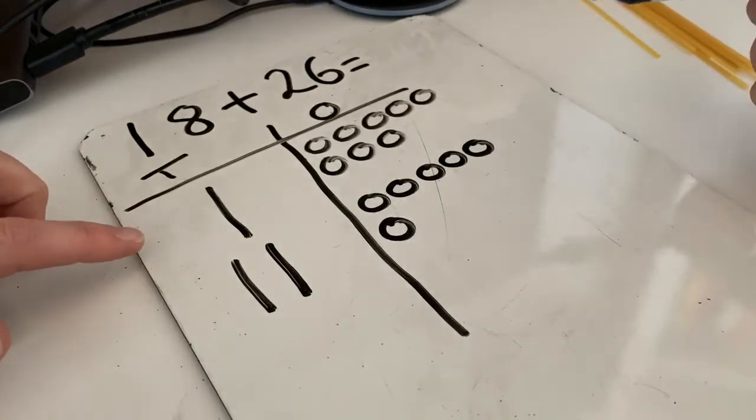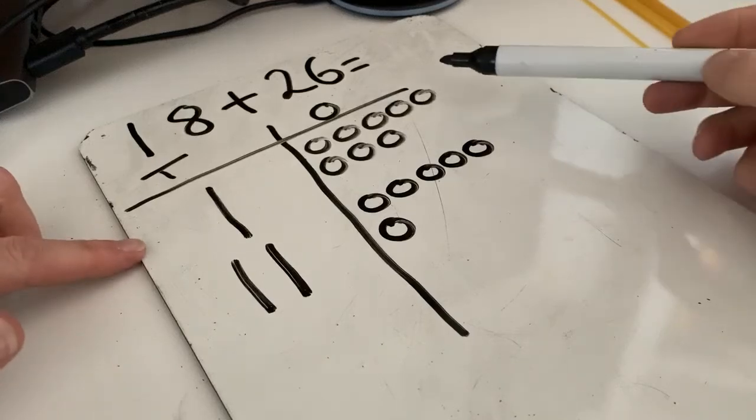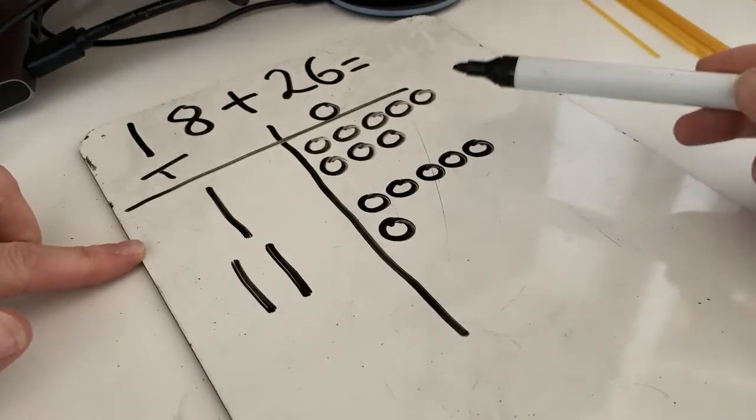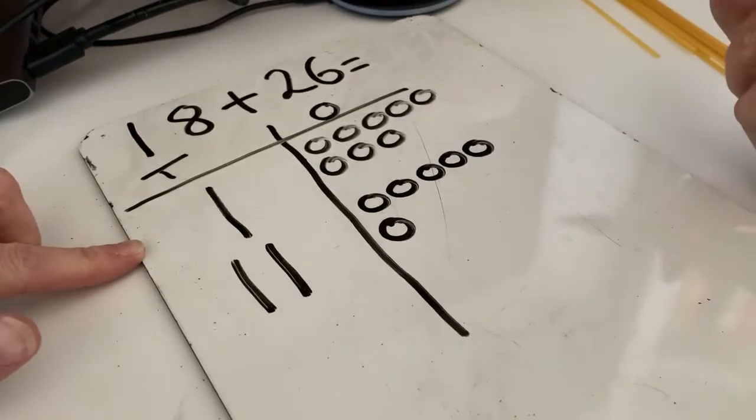Now we're going to count them up. Remember, if we have ten ones in this column, we need to exchange them for a ten in the other column.